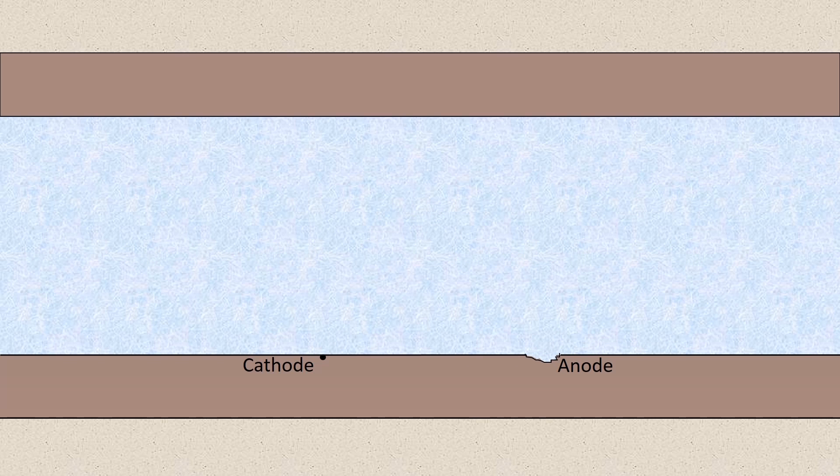So over time as this process continues at the anode, you'll be losing material and creating a pit.